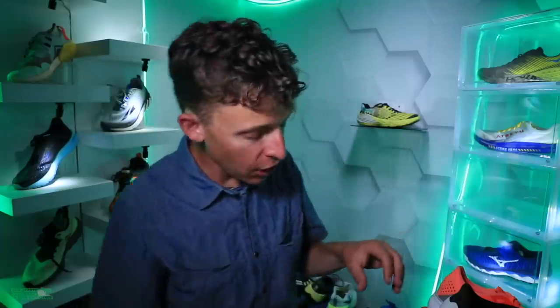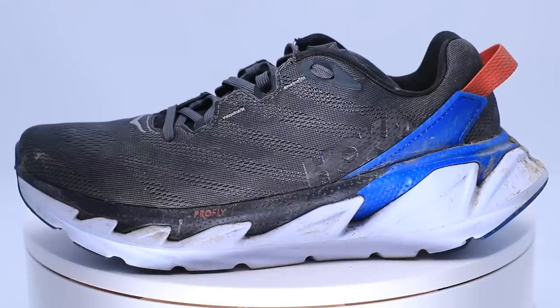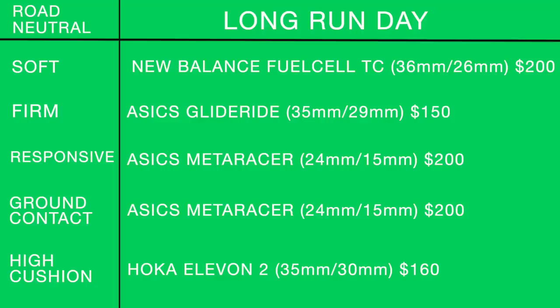Last but not least, for high cushion long run shoe: the Hoka Elevon 2. It did well as a long run shoe in early 2020 but it is a little heavy. If you like a lighter shoe keep that in mind, but it can definitely do the trick. 35mm heel, 30mm forefoot, $116.